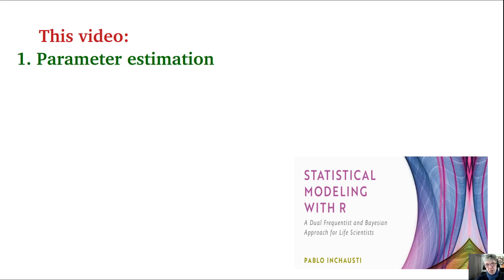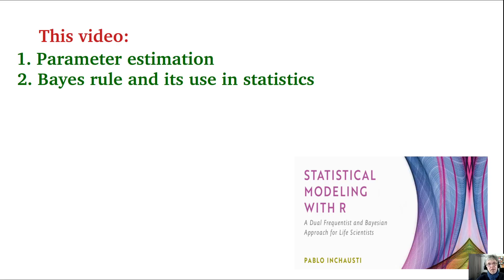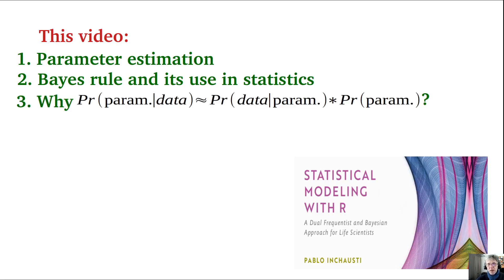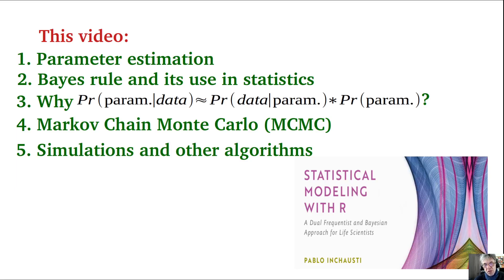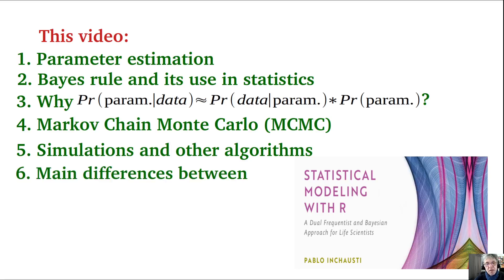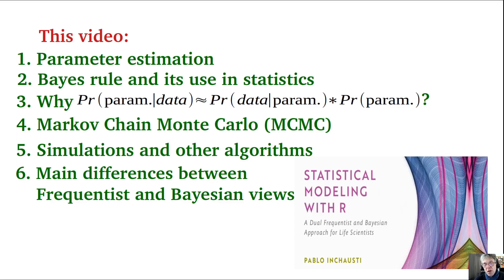Today I'm going to talk about parameter estimation, probably the main task of statistics; then the Bayes rule and its use in statistics; the simplification of Bayes rule in parameter estimation; the main algorithm responsible for the current popularity of Bayesian methods — the MCMC algorithm — illustrated with numerical simulations; and finally the main differences between the frequentist and the Bayesian views of statistics.